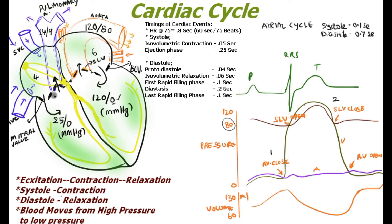This is how excitation follows contraction, and the pressures of the atria and ventricle, along with volume changes, allow the cardiac cycle to maintain the heart's pumping capacity in order to meet the demands of the body.